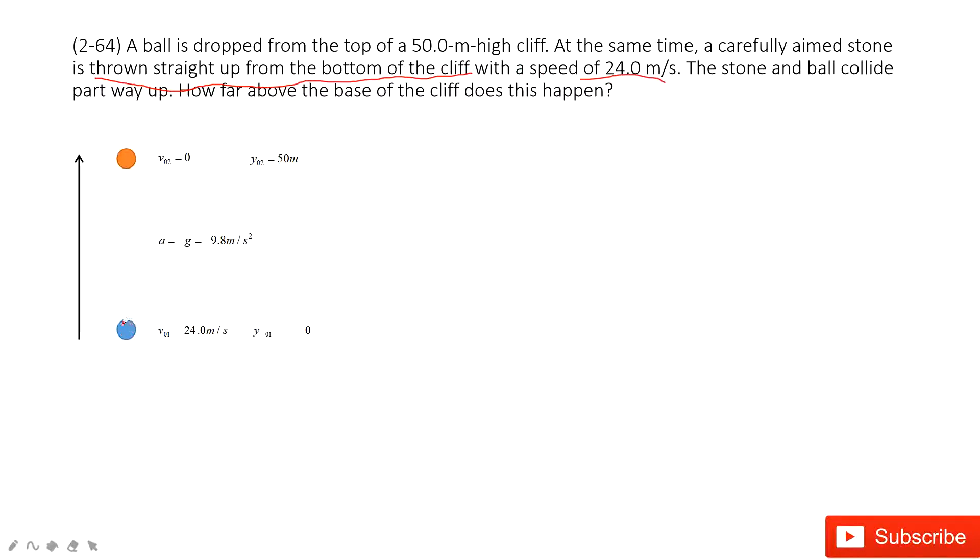So we have object one which is thrown up, so the initial velocity is 24 meters per second and the position is zero.